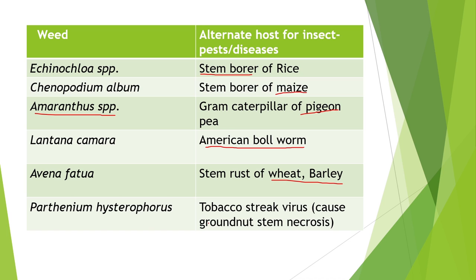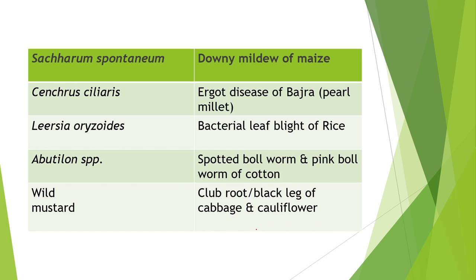Next is Parthenium hysterophorus, whose alternate host is the tobacco streak virus. Next is Saccharum spontaneum, whose alternate host is downy mildew of maize. Next is Setaria ciliaris, whose alternate host is the ergot disease of bajra. Next is Leersia oryzoides, whose alternate host is bacterial leaf blight of rice.